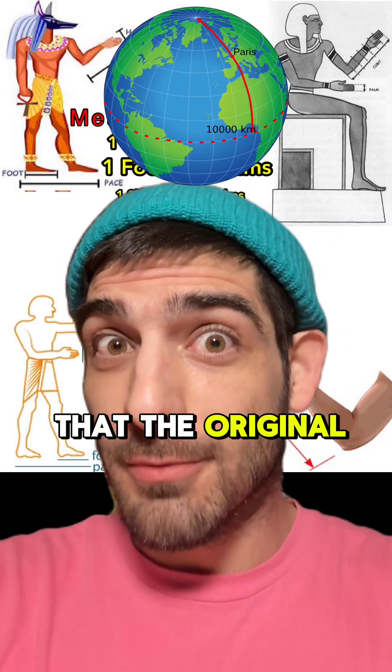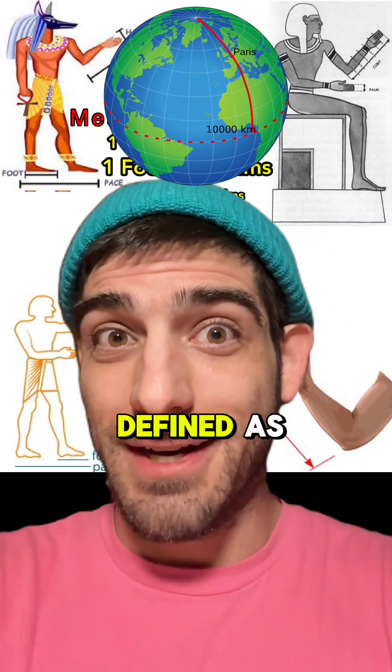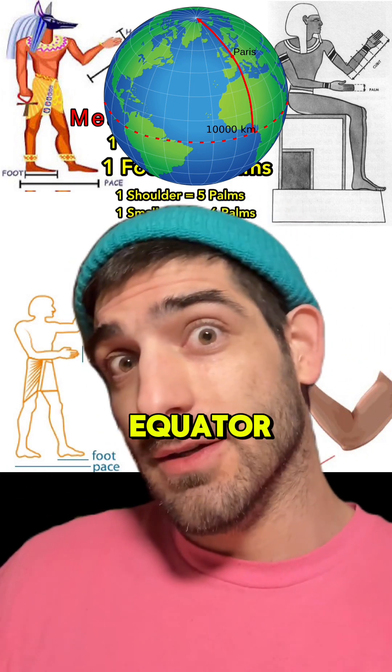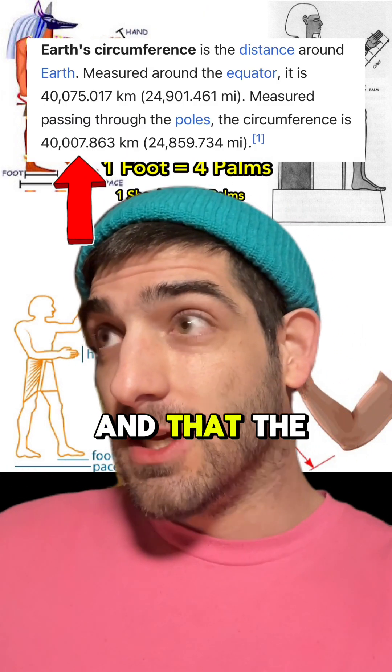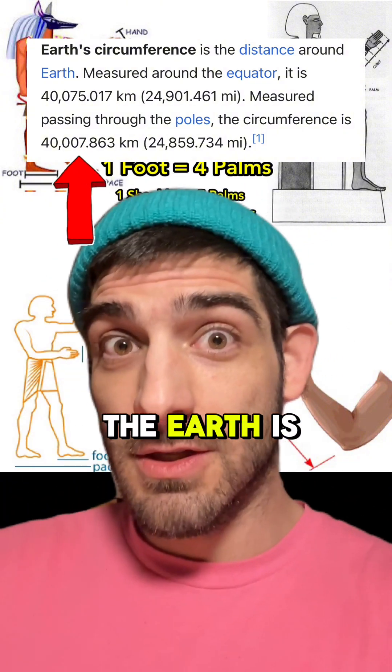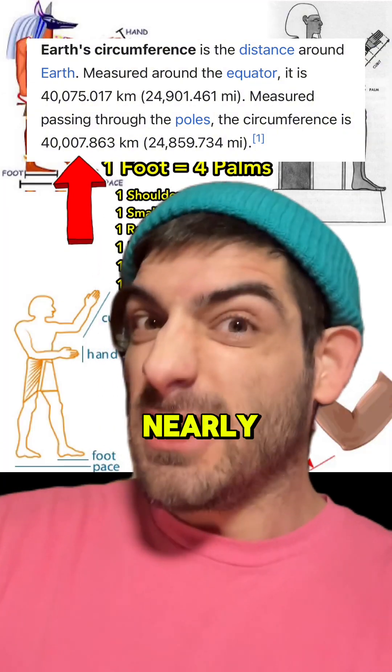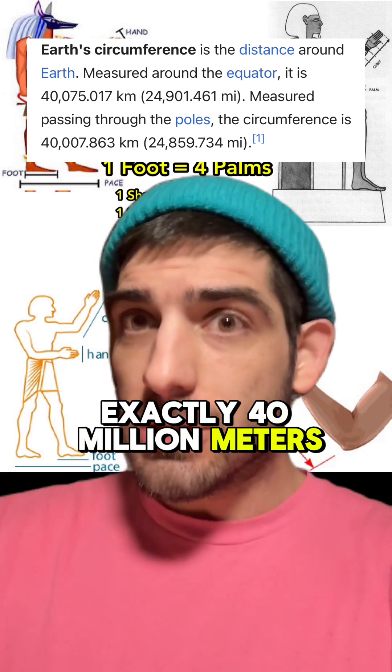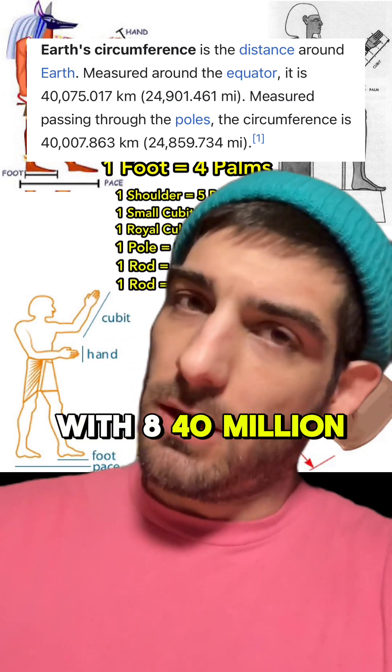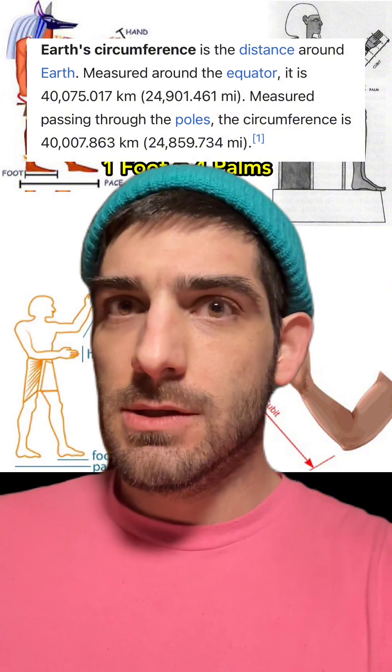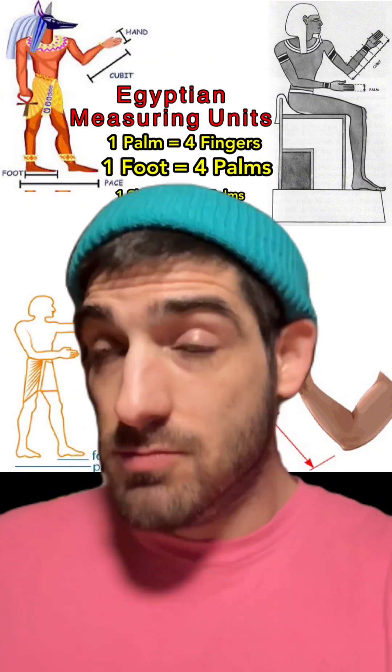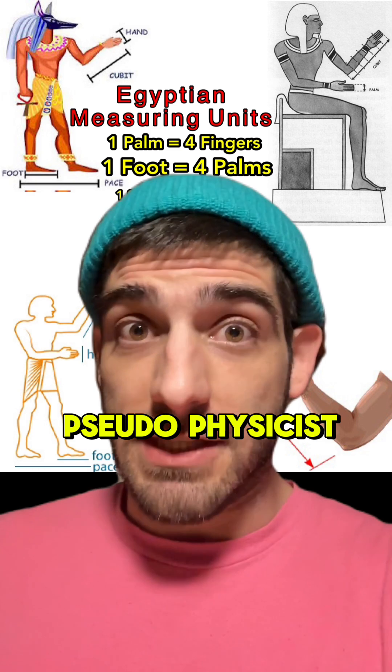Milo. Did you know that the original meter distance was defined as one ten millionth of the distance from the poles to the equator? And that the polar circumference of the earth is nearly exactly 40 million meters? 40 million, 8,000 meters? Yeah, pseudo-archaeology. No, talk about pseudo-physicists.